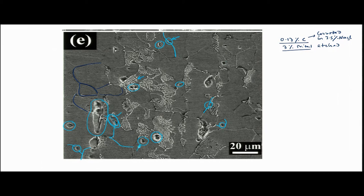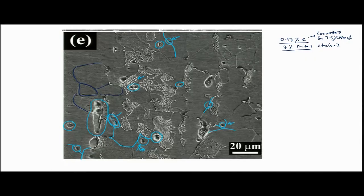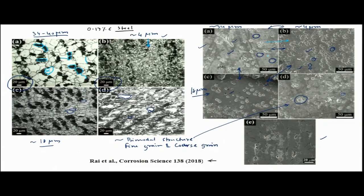Some pits formed within the grain body, but interestingly not at the center of the grain — they form close to the grain boundary. Even those pits close to the pearlite-ferrite interface are near that boundary. This confirms that grain boundary regions are susceptible to pitting. If we increase the number of grain boundaries, pitting possibilities increase. Going from 34 to 4 micrometers, pits went up; going from 4 to 18 micrometers, pits reduced — consistent with grain boundary area control of pitting.